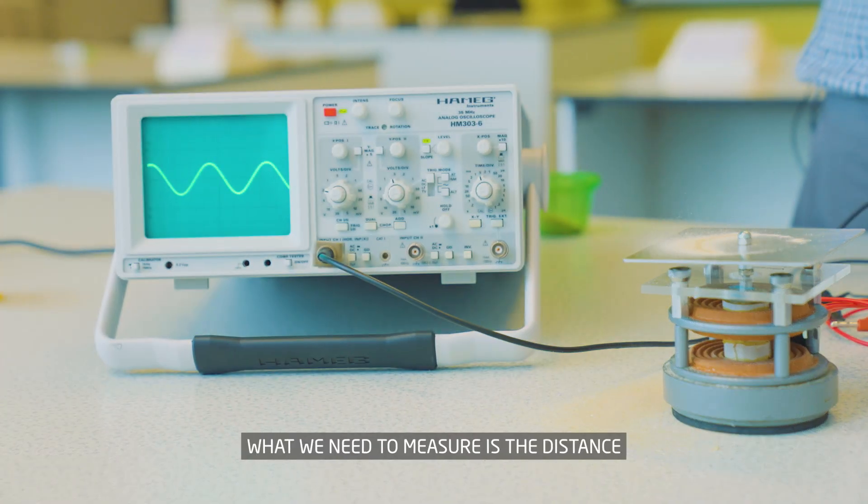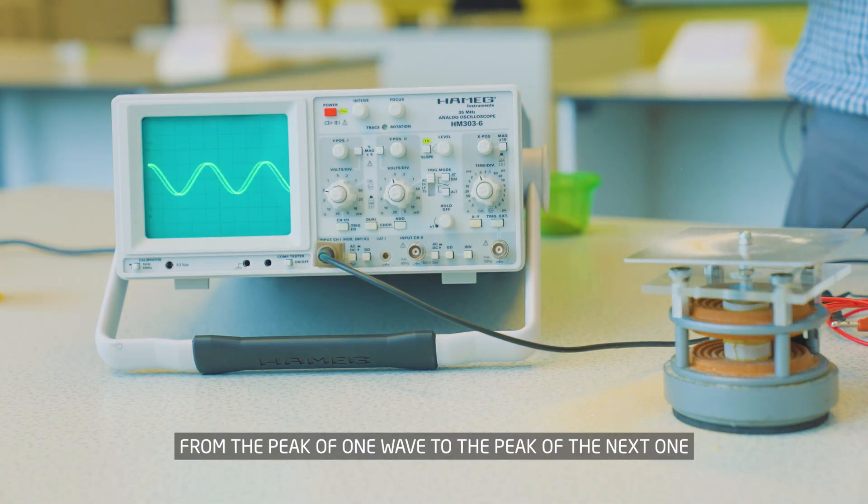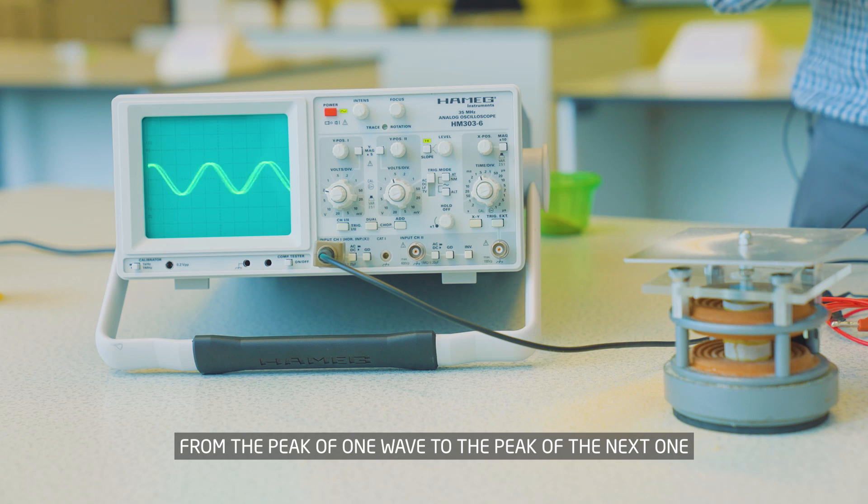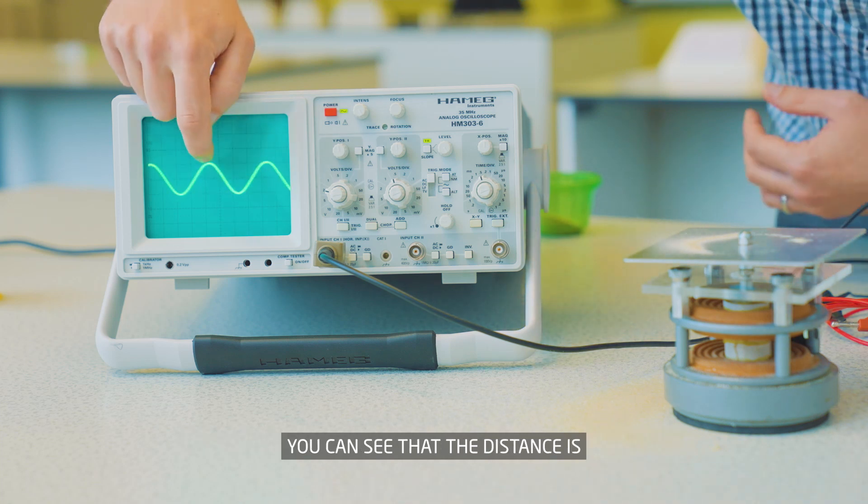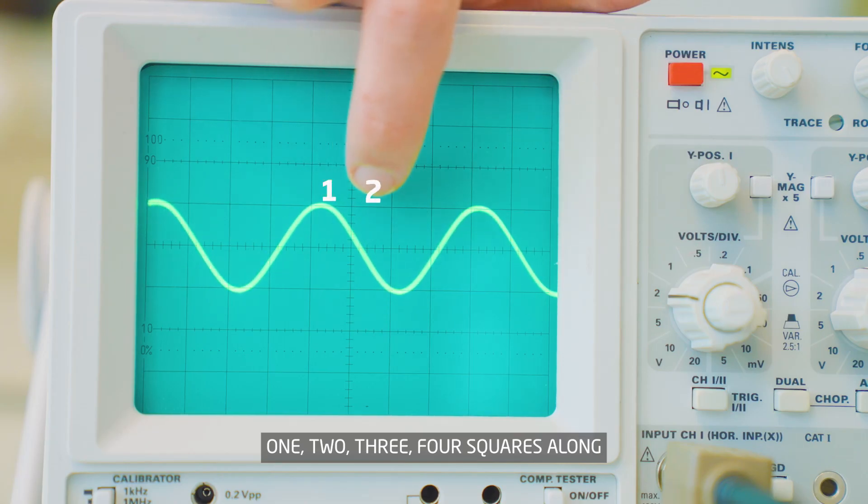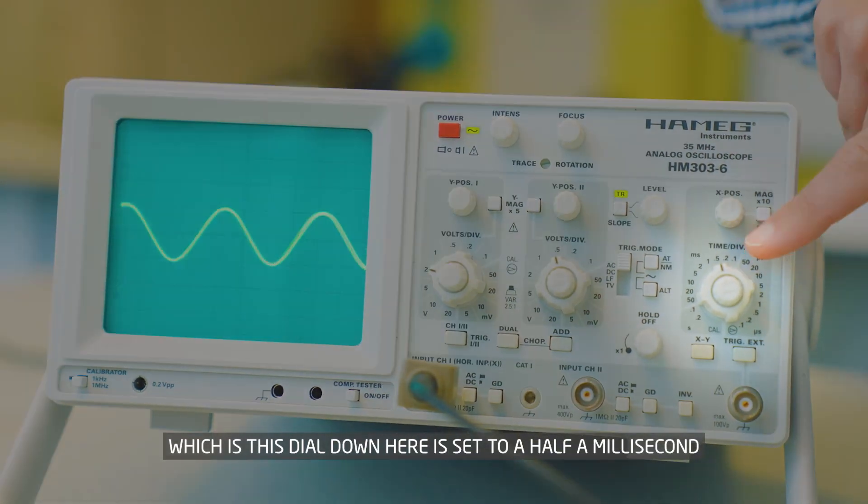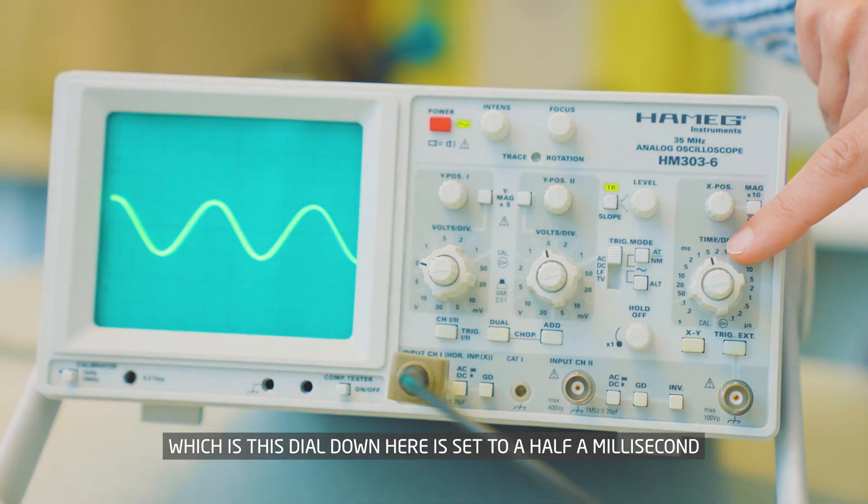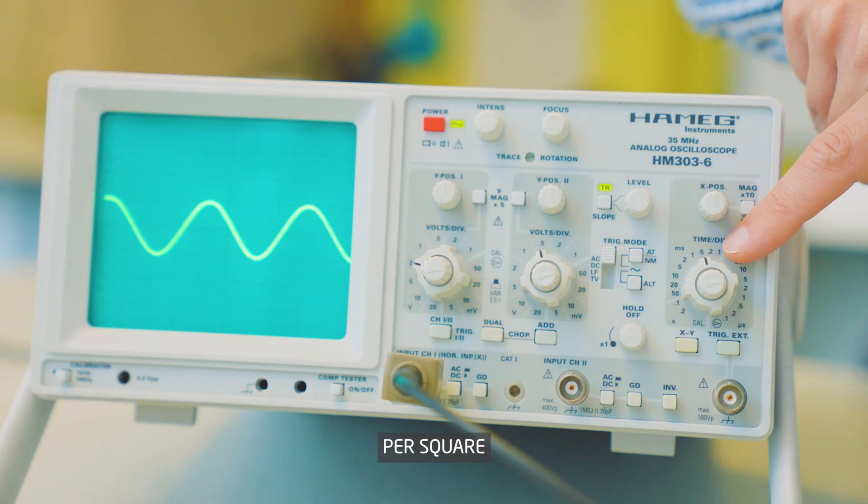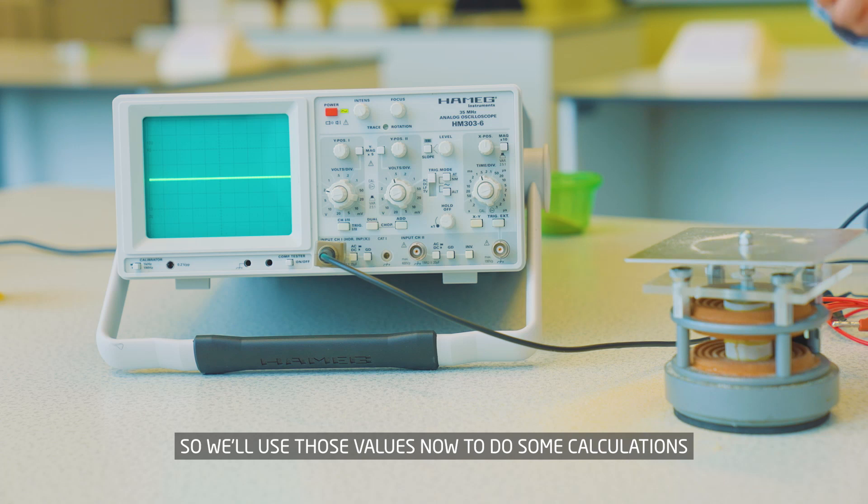We're quickly going to take some measurements. If we look at the oscilloscope, what we need to measure is the distance from the peak of one wave to the peak of the next one. You can see that the distance is one, two, three, four squares along, and the time base is set to a half a millisecond per square. We'll use those values now to do some calculations.